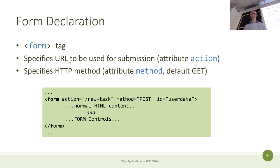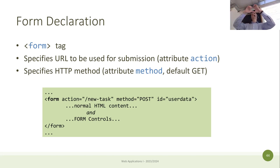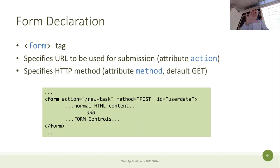The URL is the value of the action attribute, and the method is either GET or POST - but typically POST, because we modify the status of the server. Inside the form you have the so-called form controls - HTML tags that support input from the user. A very basic tag is the text input, just a box where the user can type strings. Nowadays, we are using a different approach.